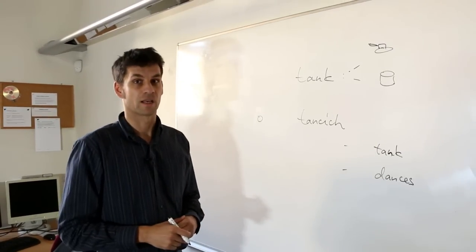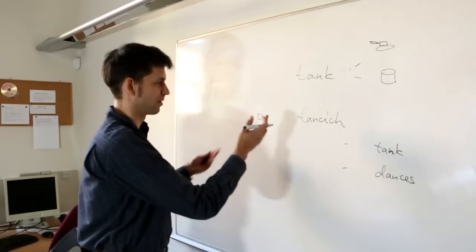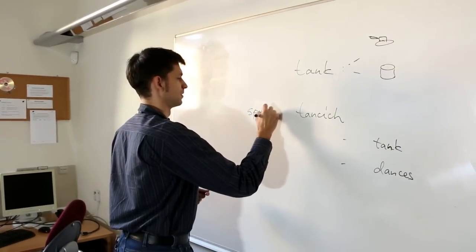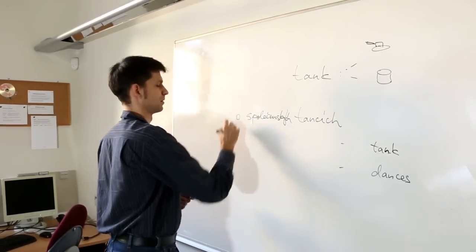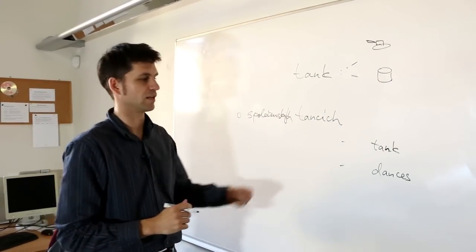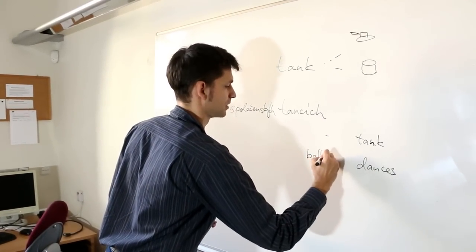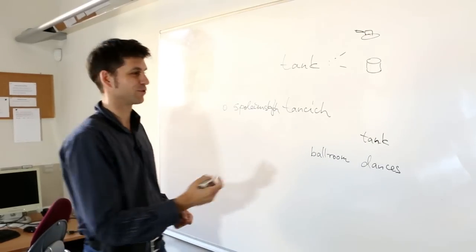I've told you it's the context that disambiguates. So if we add one of the surrounding words, such as společenských, then the phrase can be translated either as ballroom dances, about ballroom dances, or, well, sociable tanks.